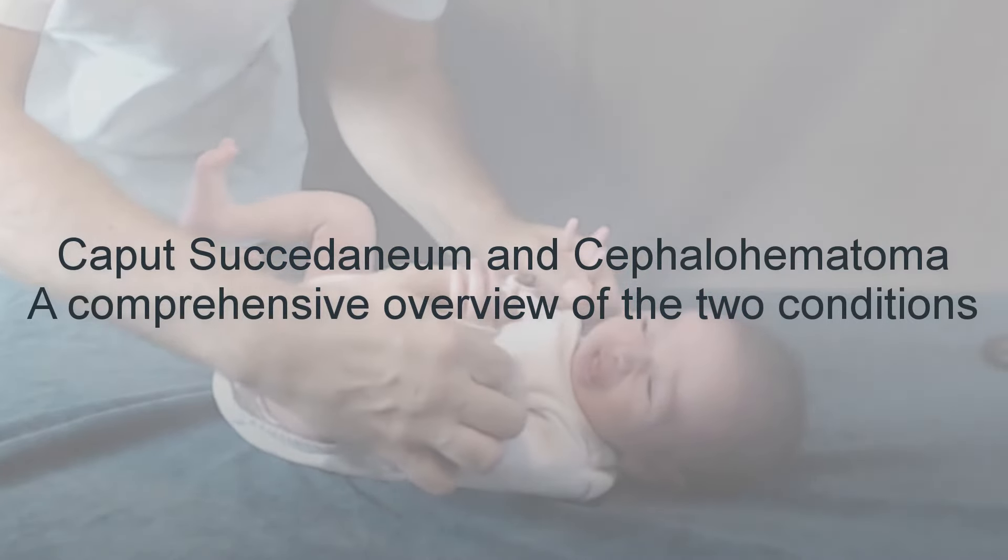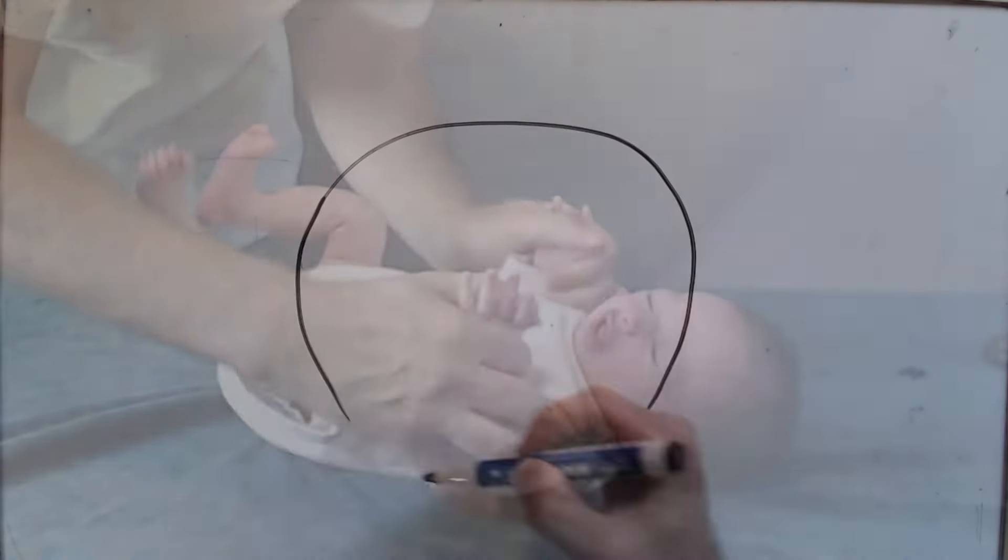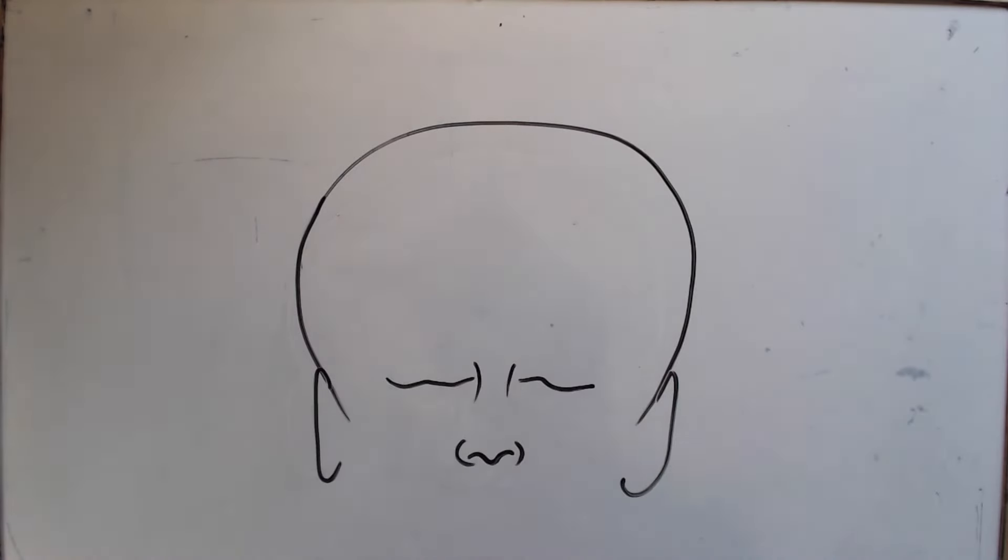Caput succedaneum and cephalohematoma. Reviewing the anatomy of the skull will make it easier to understand the differences between caput succedaneum and cephalohematoma in the fetal skull.